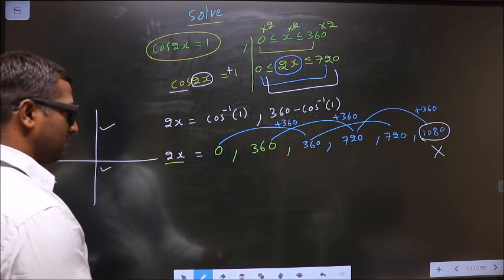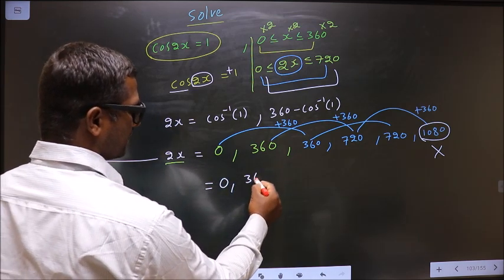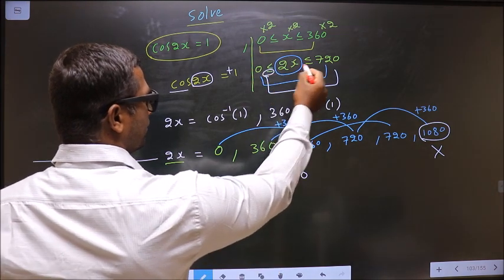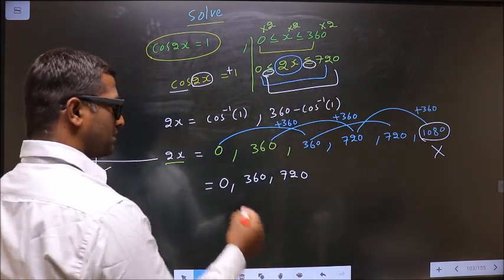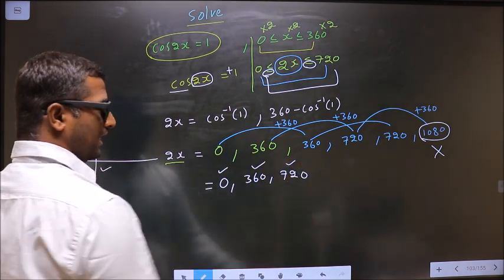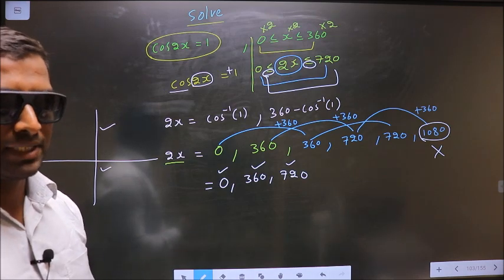Okay, now so the values we got are 0, 360, and 720. Here we have equal to symbols, so 0 and 720 are included. Equal to means that.